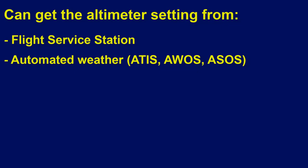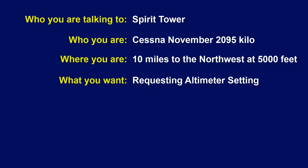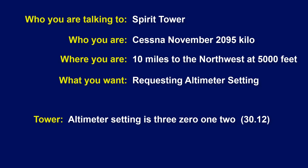If for some reason you can't get the altimeter setting from other sources, you can always request it from air traffic control. Say: "Spirit Tower, Cessna November 2095 Kilo, 10 miles to the northwest at 5,000 feet, requesting altimeter setting." The tower will respond with something like: "Altimeter setting is 30.12."